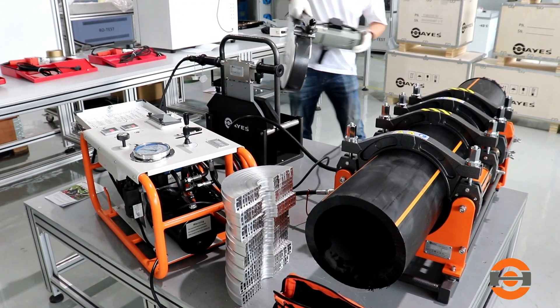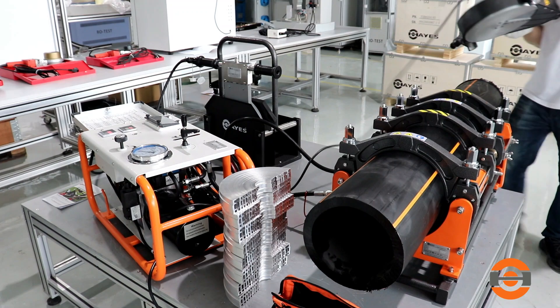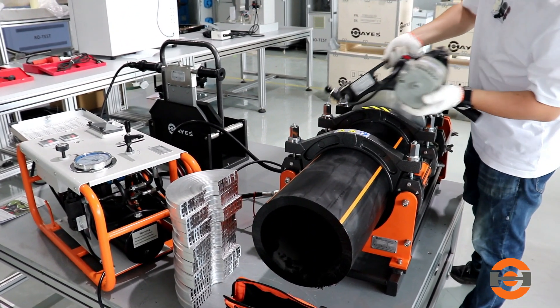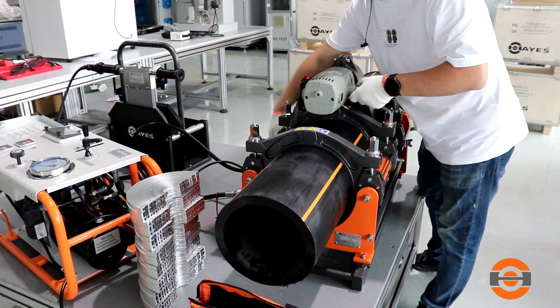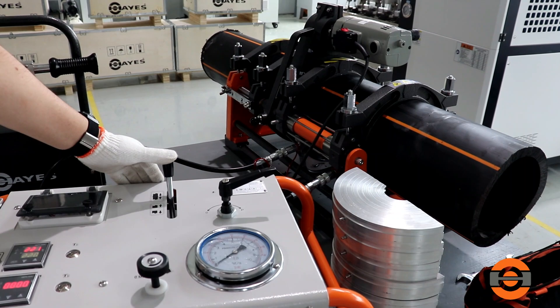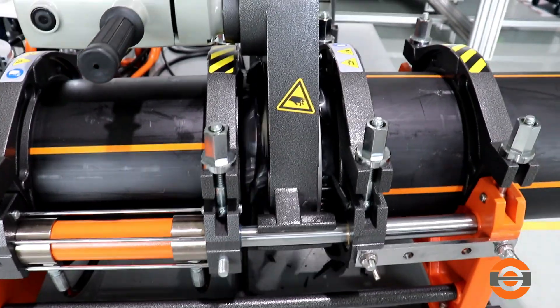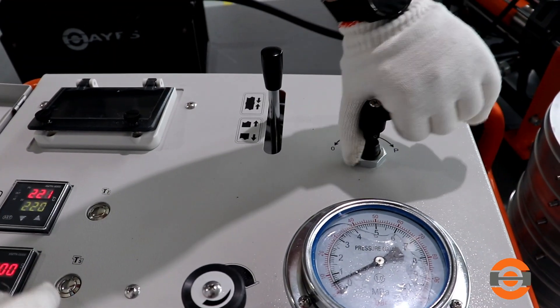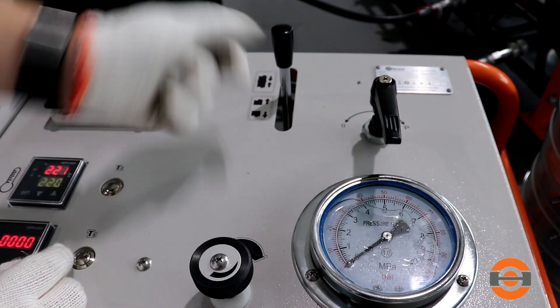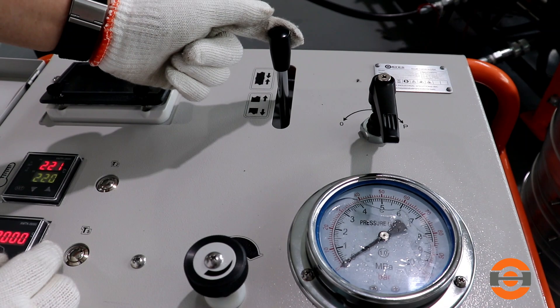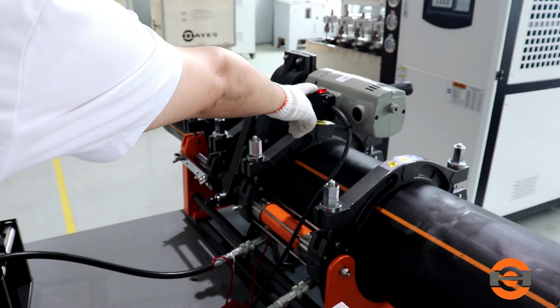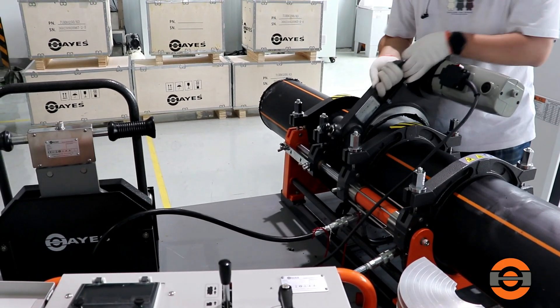Place the trimmer between the pipe ends. Turn the trimmer on and bring the pipe ends together against the trimmer with minimal force to establish smooth, clean, parallel mating surfaces. If the trimmer begins to struggle, apply less force. Use the hydraulic unit to open the clamps and separate the pipe ends from the trimmer. Turn off the trimmer first, then remove the trimmer when the blades have stopped spinning.